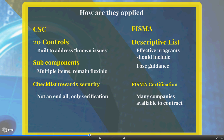How they're applied: the CSC has 20 specific controls built to address known issues, or the known bads. Within these controls there are sub-components, and those sub-components remain flexible. It's not exactly defined as what you have to do, and it evolves as our threats evolve. It gives those who use the published framework a layout towards security and how to implement best known practice — it's more a checklist towards a security framework.